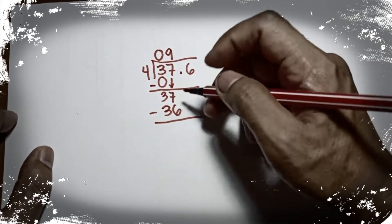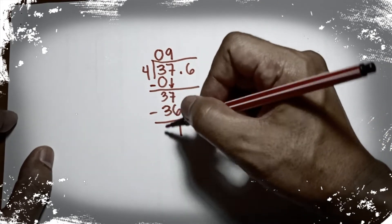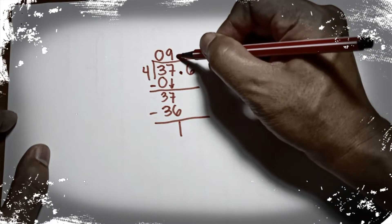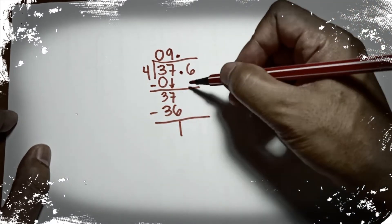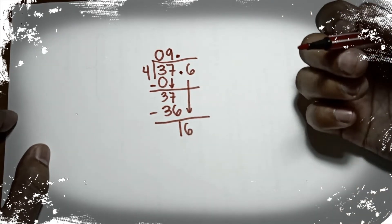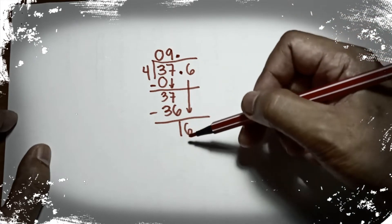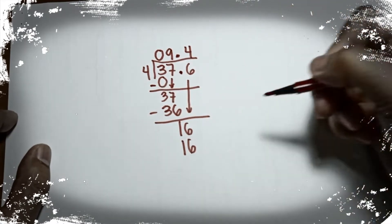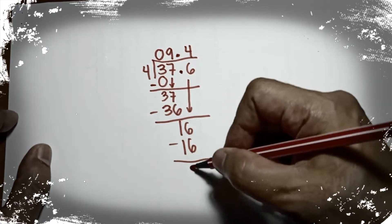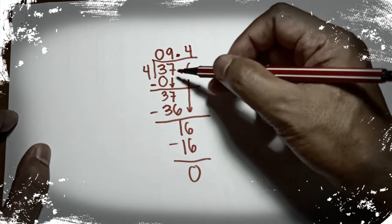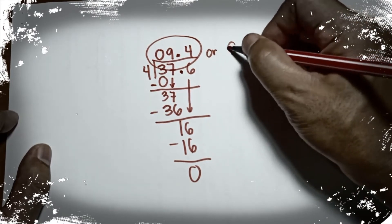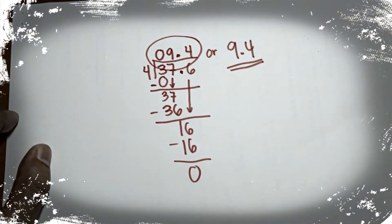You can make nine 4s out of 37, so 9 times 4 is 36. What is 37 minus 36? That's 1, and 3 minus 3 is 0. Then, as you can see the point here, just put your decimal point directly on top of it. Bring down 6. How many 4s can you make from 16? You can make 4, so 4 times 4 is 16, and 16 minus 16 is 0. So when you divide 37.6 by 4, the answer is 9.4.